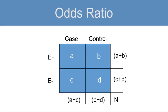Remember that odds is P divided by 1 minus P, the probability of an event occurring divided by the probability of it not occurring.